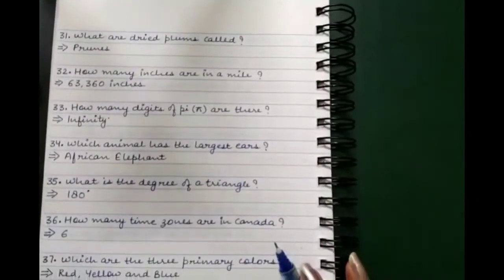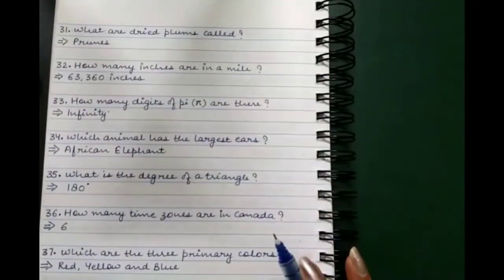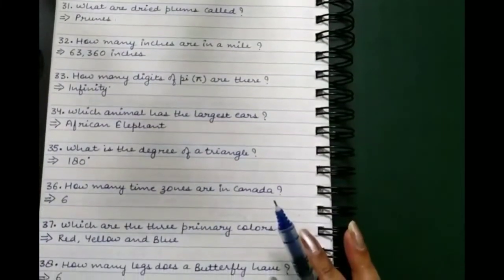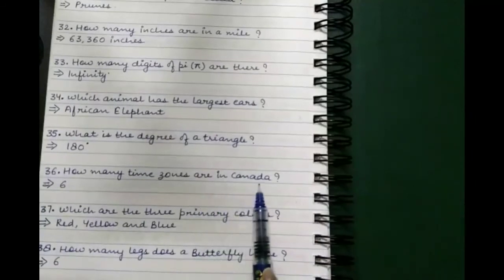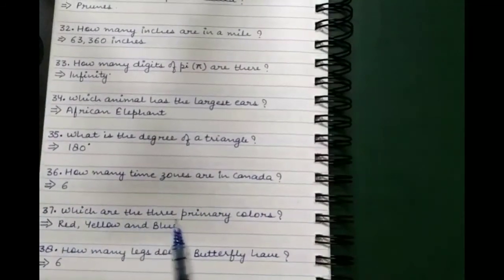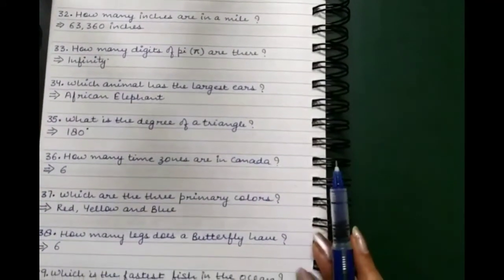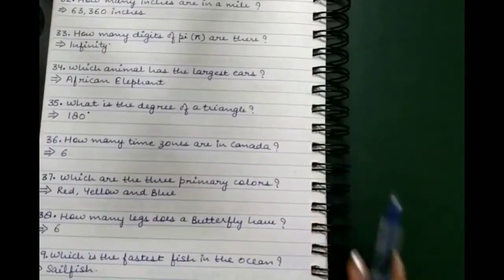How many inches are in a mile? 63,360 inches. How many digits of pi are there? Infinity. Which animal has the largest ears? African elephant. What is the degree of a triangle? 180 degrees. How many time zones are in Canada? Six.